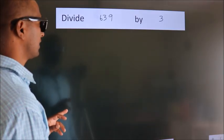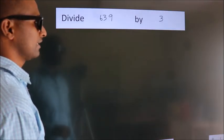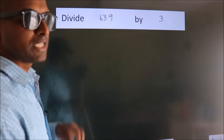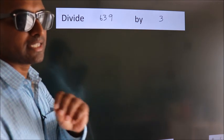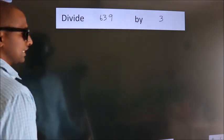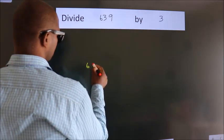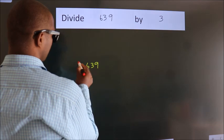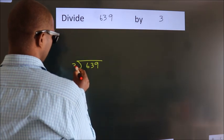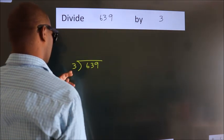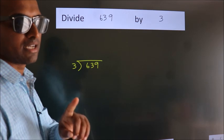Divide 639 by 3. To do this division, we should frame it in this way. 639 here, 3 here. This is your step 1.